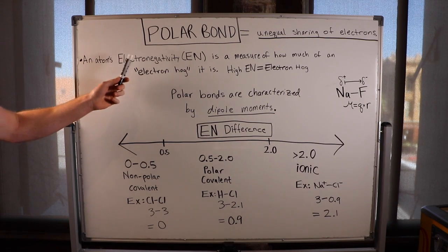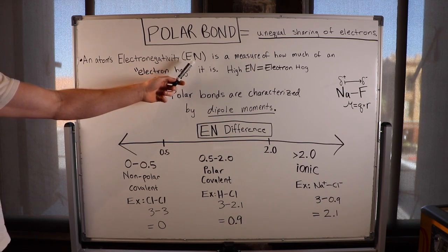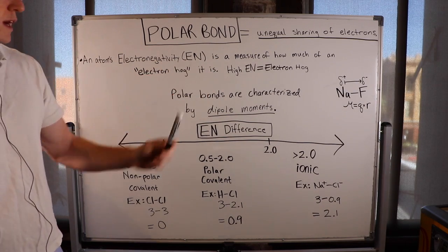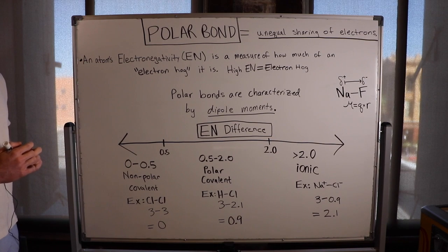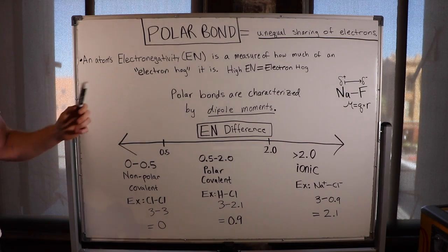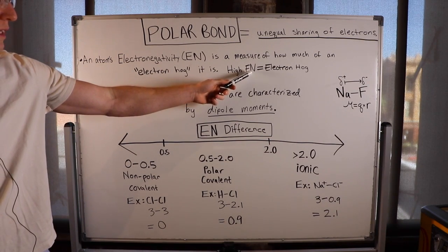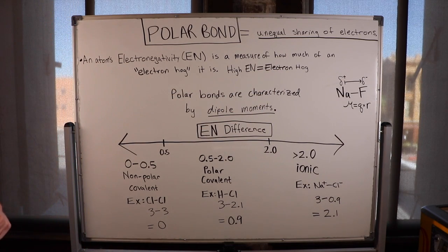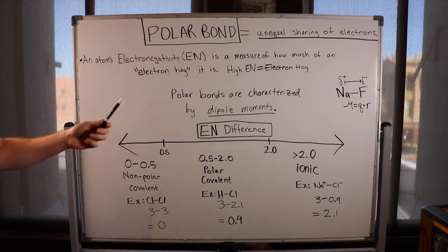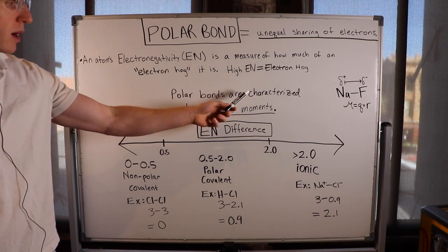An atom's electronegativity, sometimes abbreviated EN, is a measure of how much of a quote-unquote electron hog it is. So if an atom has a high level of electronegativity, it is an electron hog. There are actually ways to quantitatively describe how polar a bond is.